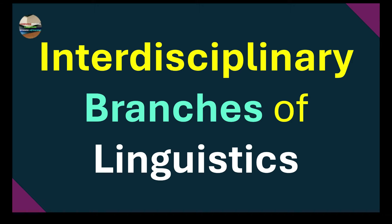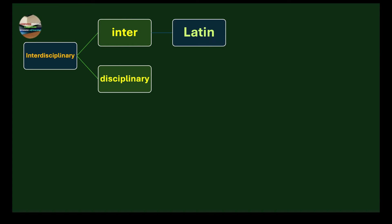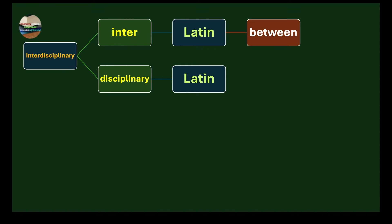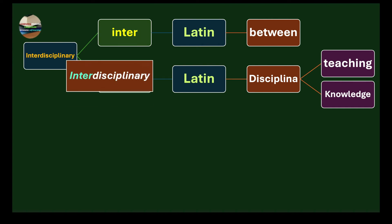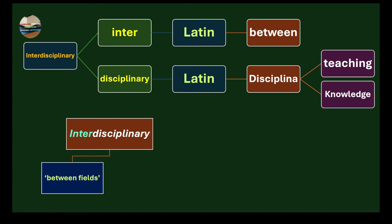Hello and welcome to a very challenging topic: interdisciplinary branches of linguistics. The word interdisciplinary is divided into two parts — inter and disciplinary. Both words come from Latin. Inter in Latin means between, and disciplinary comes from the Latin word disciplina, which means teaching or knowledge. Together, interdisciplinary means between fields.